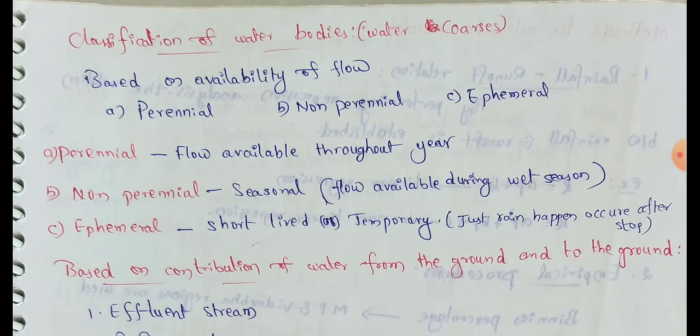First one: perennial stream — flow is available throughout the year.